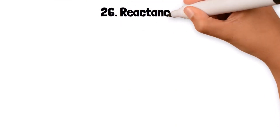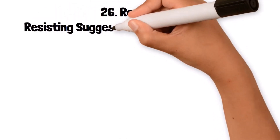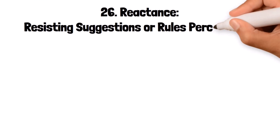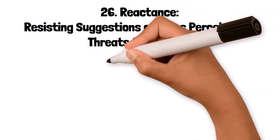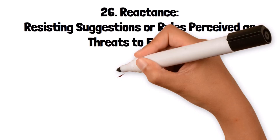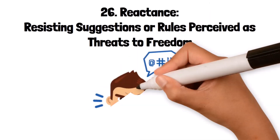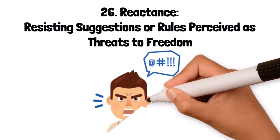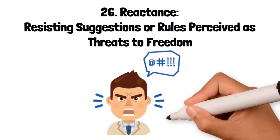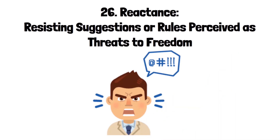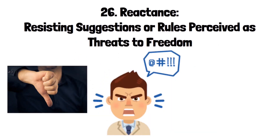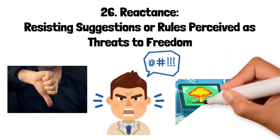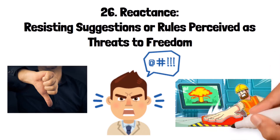26. Reactance: resisting suggestions or rules perceived as threats to freedom. Reactance is a cognitive bias where people have a negative reaction to being told what to do, especially if they perceive it as a threat to their freedom or autonomy. This bias often leads to doing the opposite of what is suggested or required. For example, if someone is told not to touch something, they might feel a strong urge to touch it just to assert their independence.